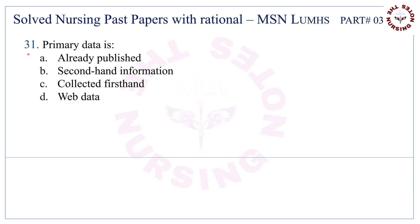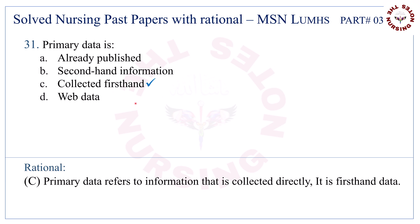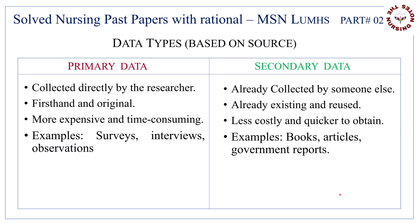Question number 31. Primary data is — the correct answer is C — collected first hand. This is the basic difference between primary and secondary data.